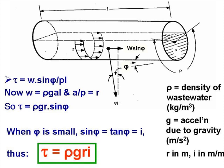The tangential force exerted by the flow of wastewater is the component of its weight in the direction of flow, w sine phi, and the wetted boundary area is p, the wetted perimeter, times l, the unit length of the sewer that we are considering.